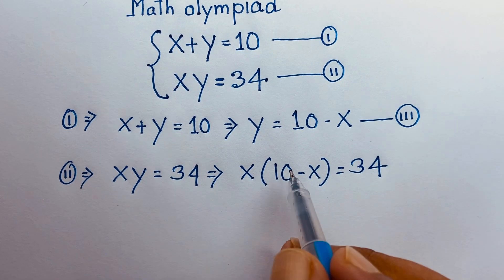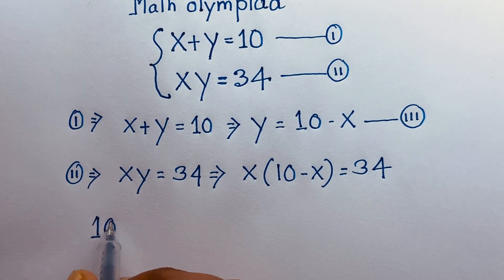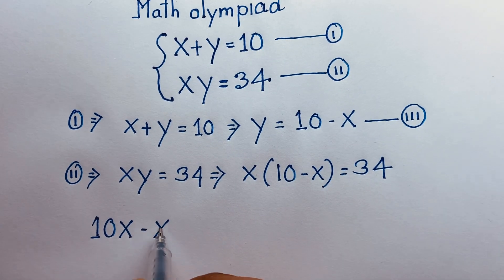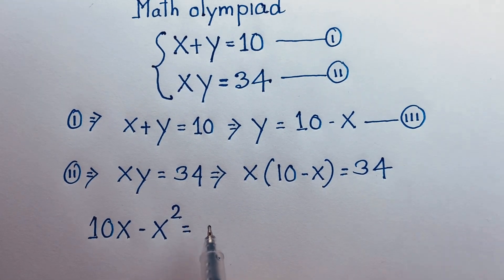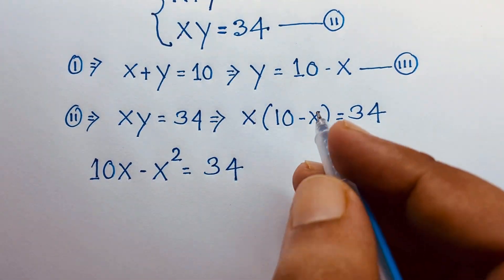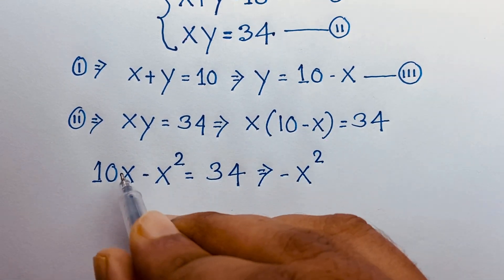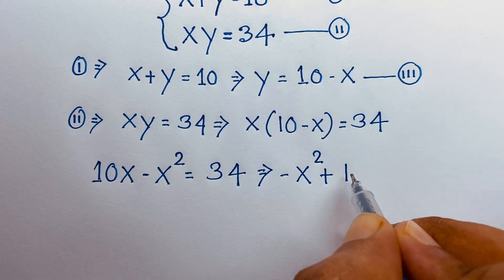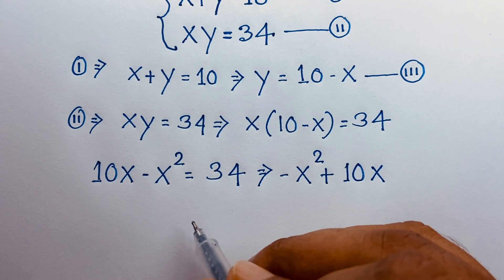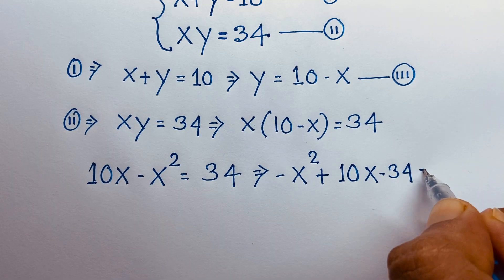Expanding: 10 times x will be 10x, and minus x squared is equal to 34. So we will find a nice quadratic equation. I take negative x squared and positive 10x. If I move 34 to this side, it will be negative 34, so negative x squared plus 10x minus 34 is equal to 0.